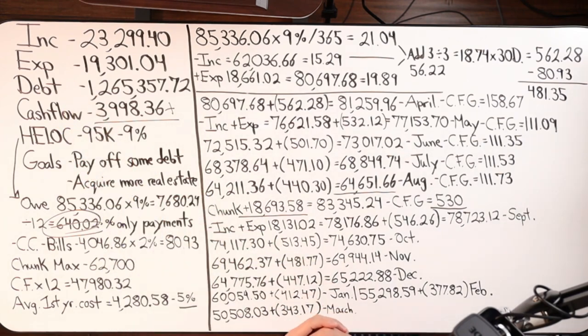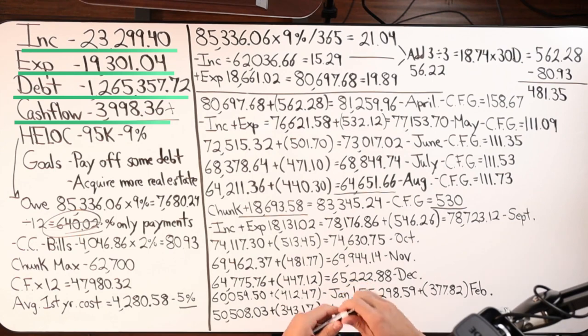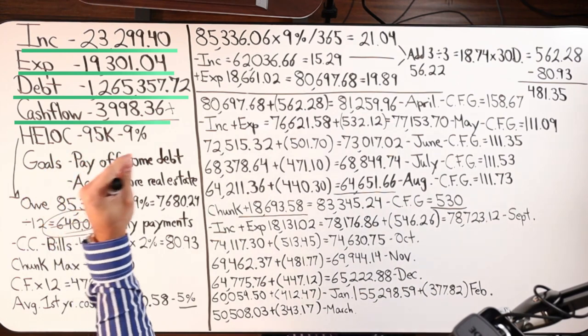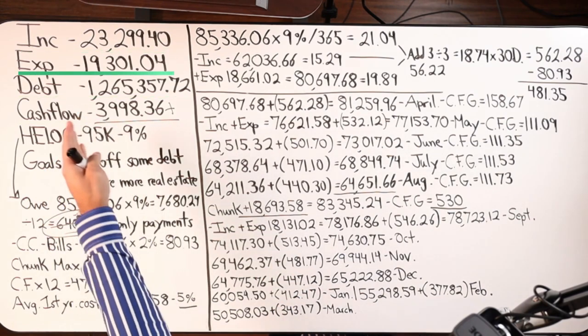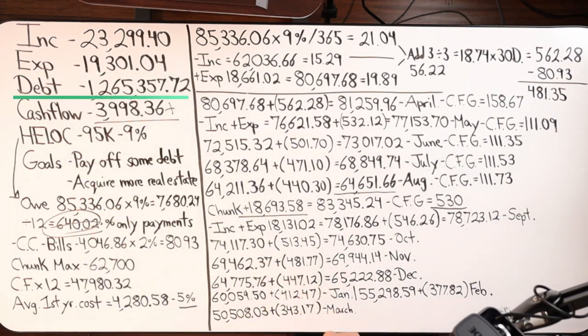Starting off with the four major numbers. Client on the board here is making $23,299.40 a month. Their total overestimated expenses are $19,301.04. Total debt is $1,265,375.72. A lot of debt.